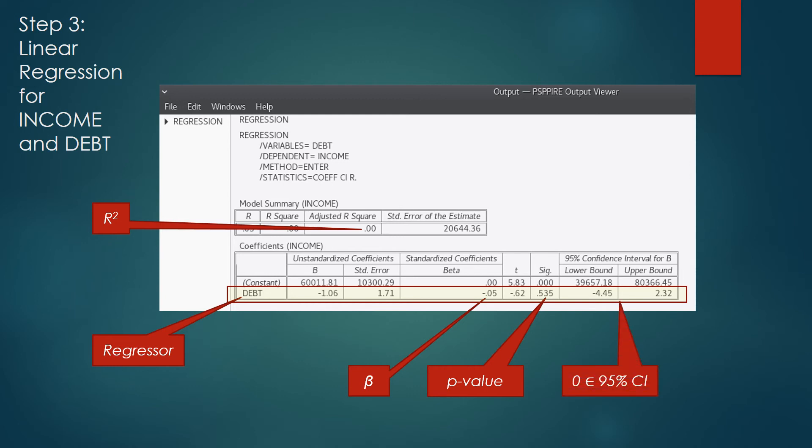And you can see the confidence interval, 95%, is listed all the way to the right. You should notice 0 is in the confidence interval. That tells us we likely do not have a significant regression.